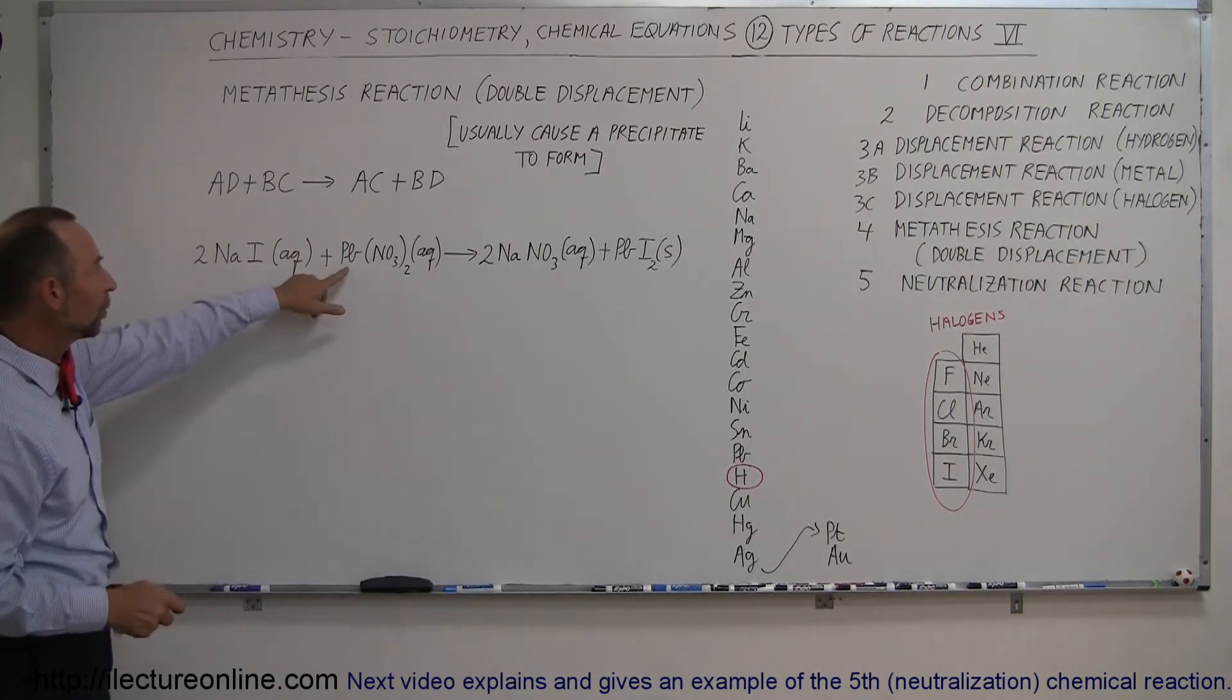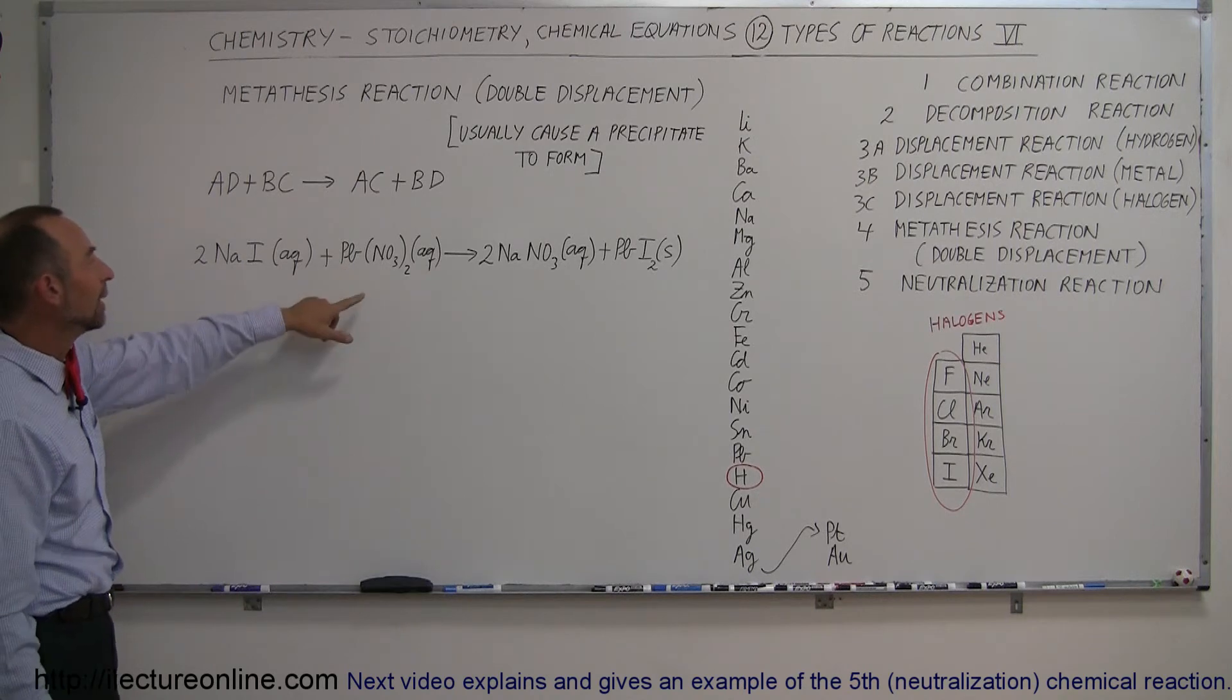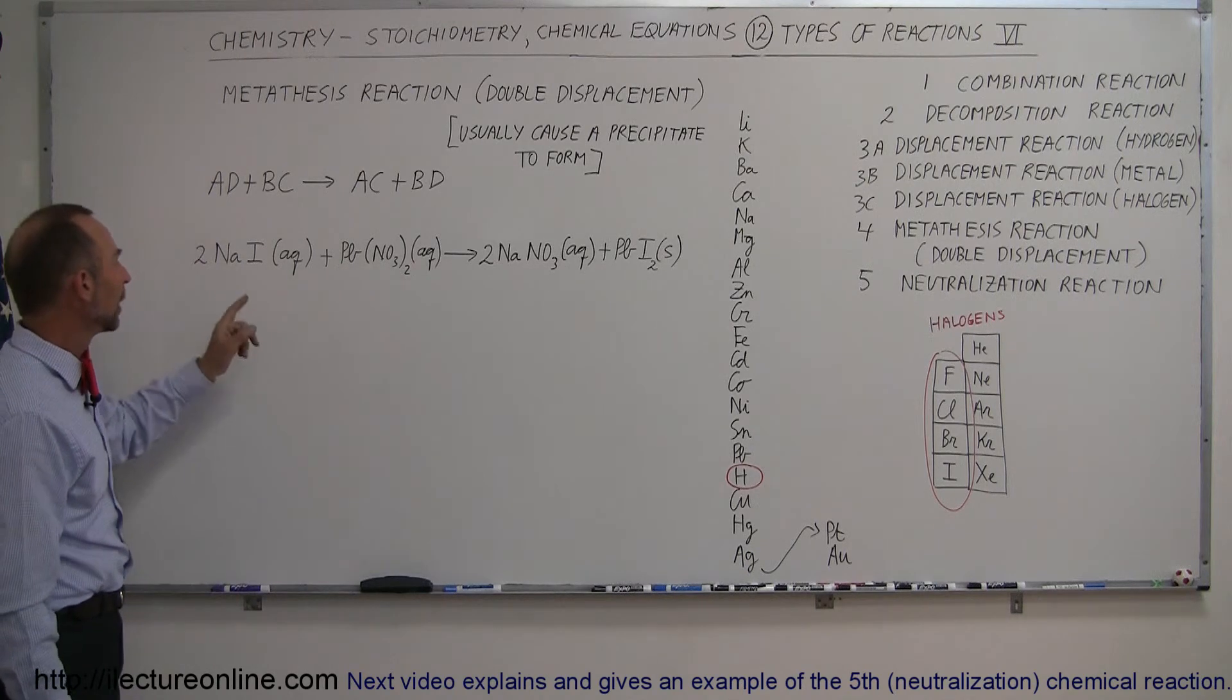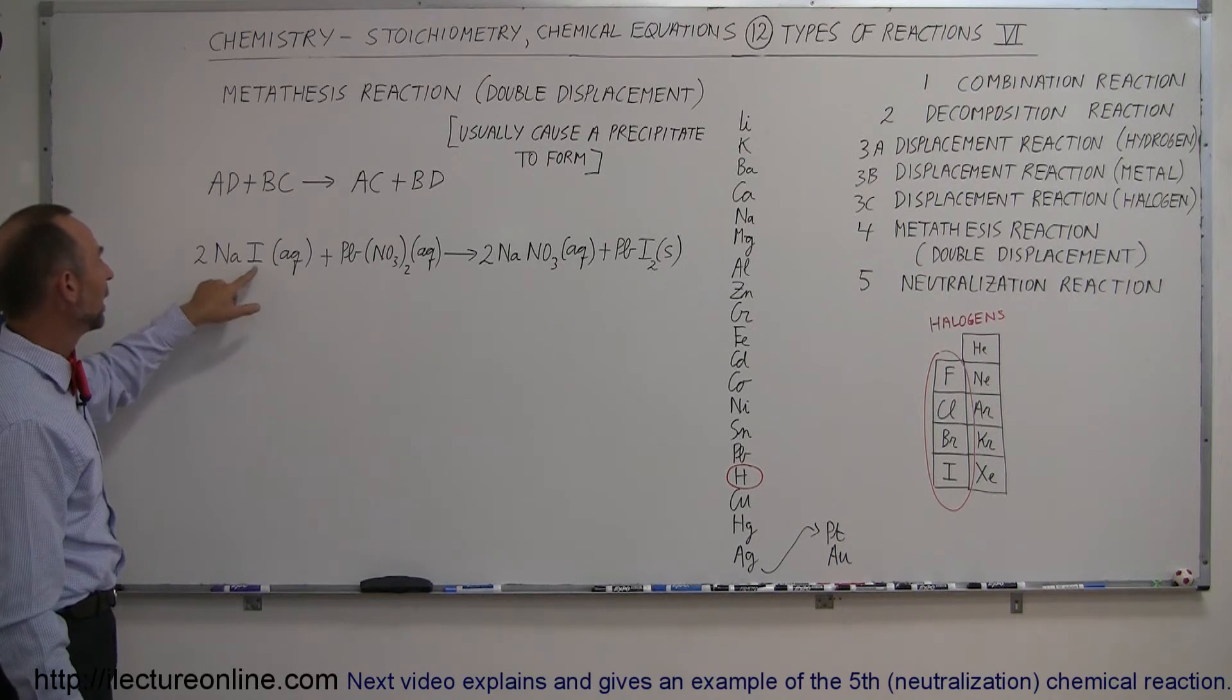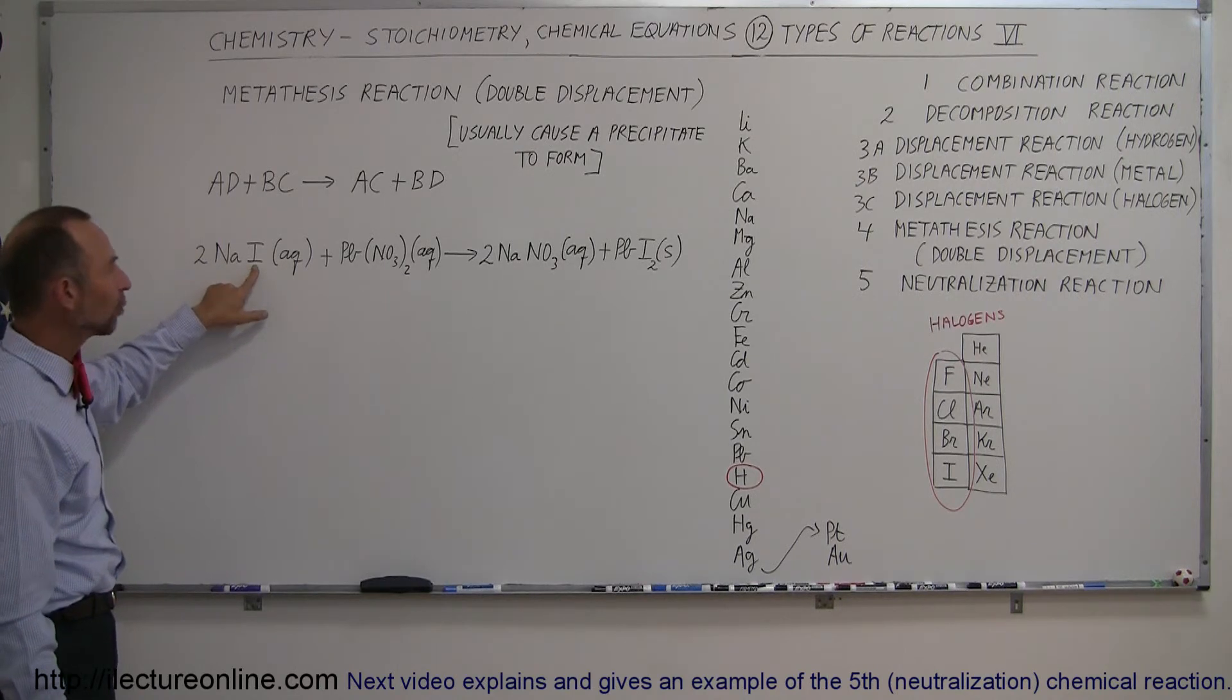Notice that the lead will be a +2 ion, the nitrate will be a -1 ion, that's why we need two of them. The sodium will be +1, and the iodine will be -1.